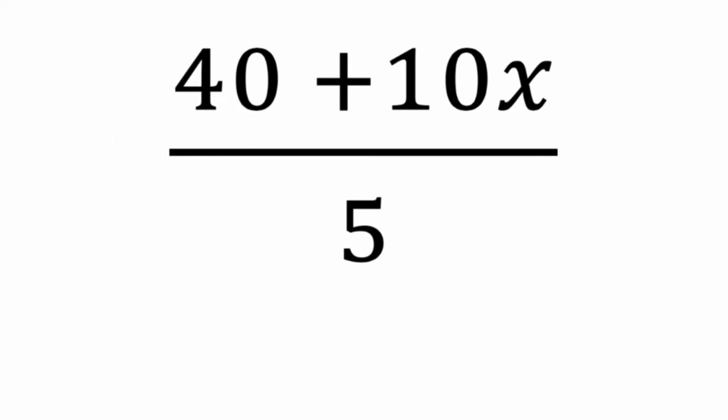First of all, we have 40 and 10x in the numerator, so I think of that as one group of terms. We're dividing all of that by 5.